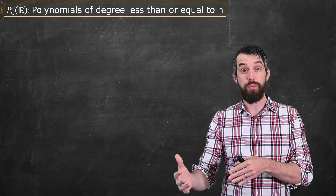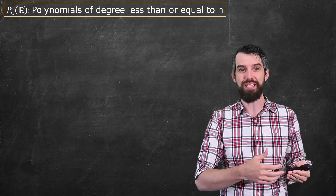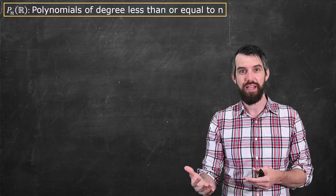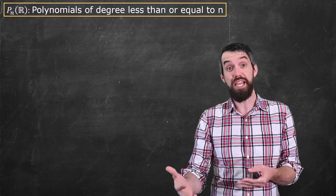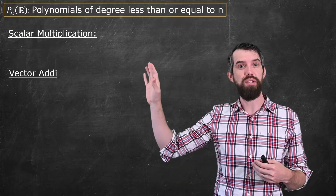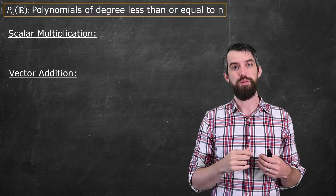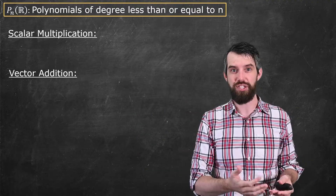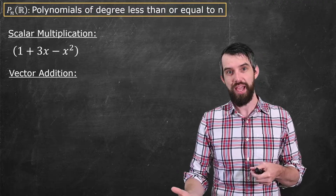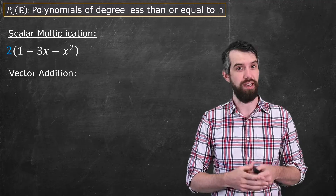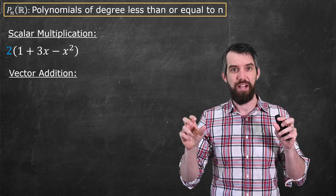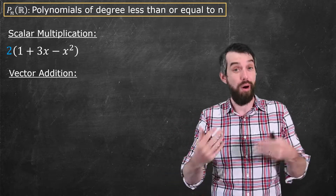Before we jump into it, we should talk a little bit about what exactly a vector space is and why polynomials of degree less than or equal to n should classify as a vector space. The first thing to observe is that polynomials have the same two basic operations that vectors in Rn do. There's scalar multiplication of polynomials and vector addition of polynomials. This is a vector space over the reals, which means the scalars are real numbers.